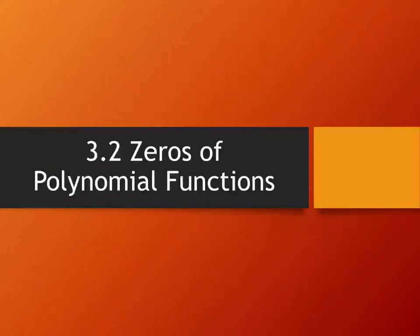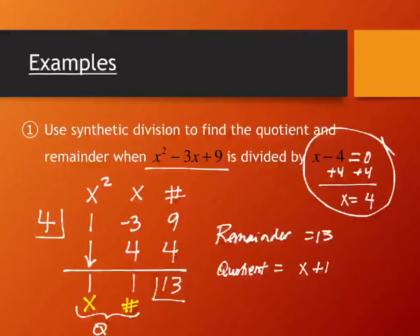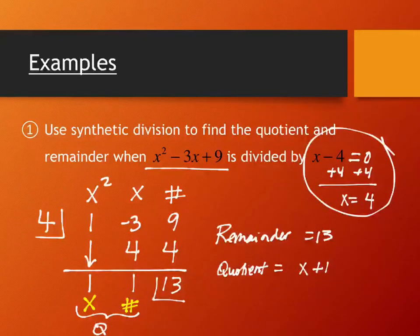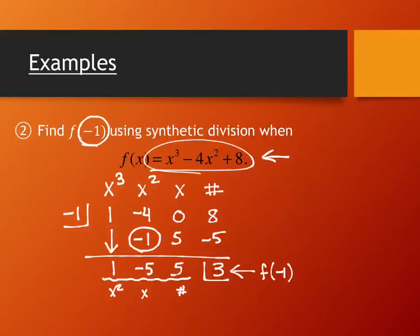We're jumping into section 3.2, zeros of polynomial functions, to remind you what we had done. We looked at synthetic division in two different ways: given x minus 4 as a factor, setting it equal to zero so we put positive 4 on the outside, and also being given a value directly—like negative one—to place on the outside.